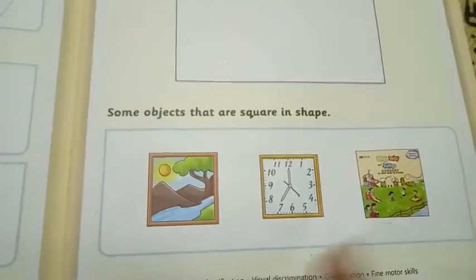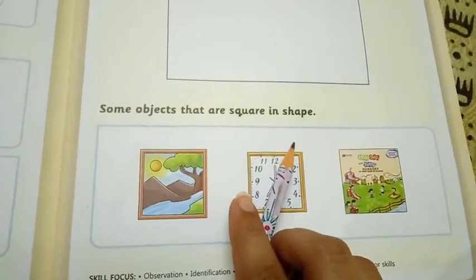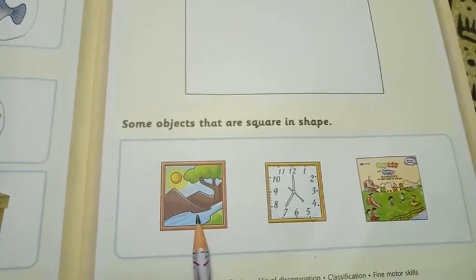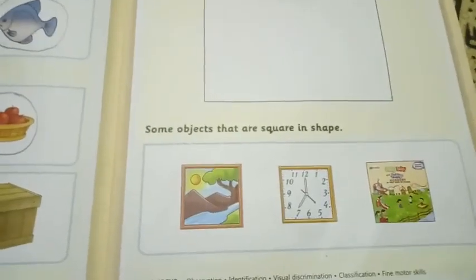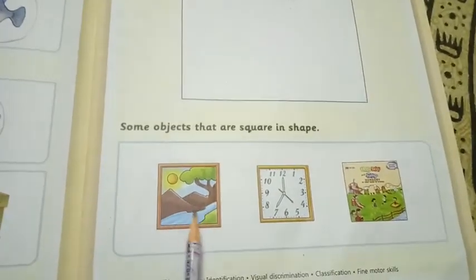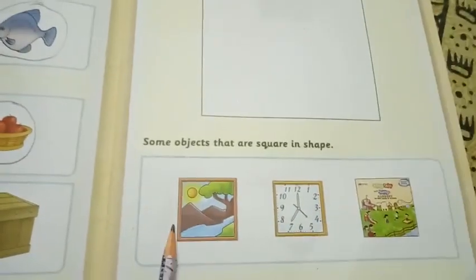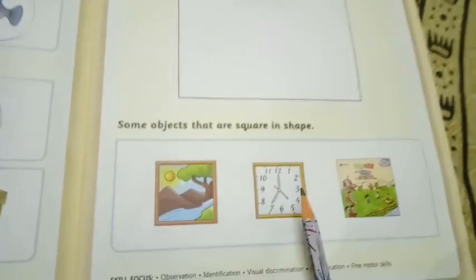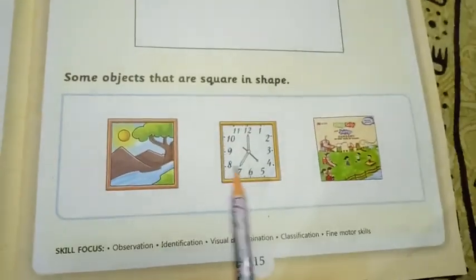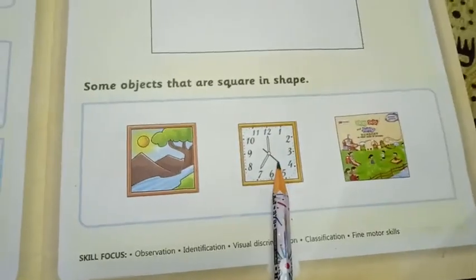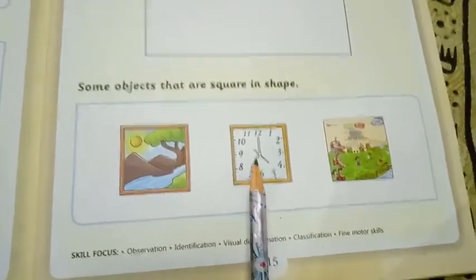So now I will show you some objects which have square shape. Which shape? Square shape. Toh some objects that are square in shape. Here you can see. Yes. It is also. This is a photograph. Scenery. It is also a square shape. Can you see this? It is also a square shape. A watch. It is also looking same. Yes. All sides are same. And which shape it is? Square shape.